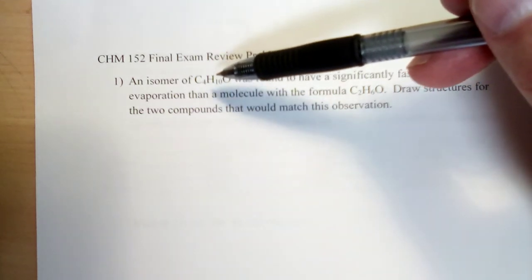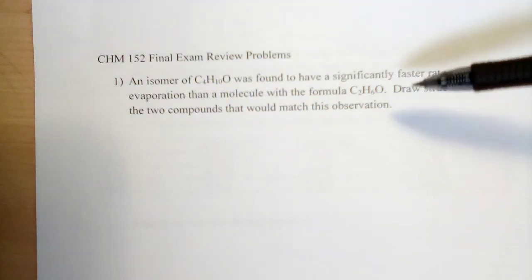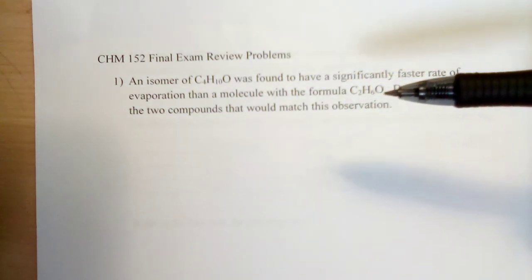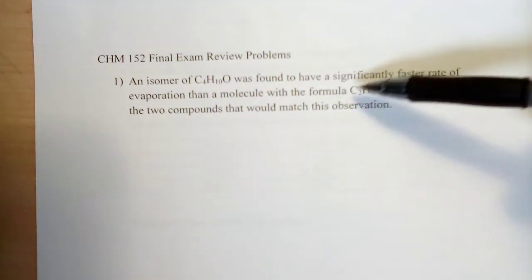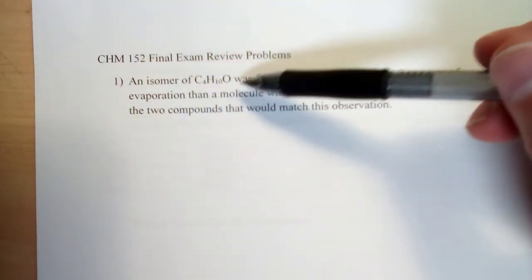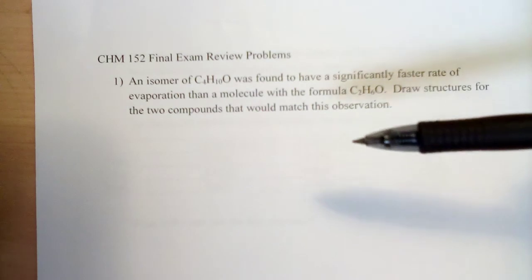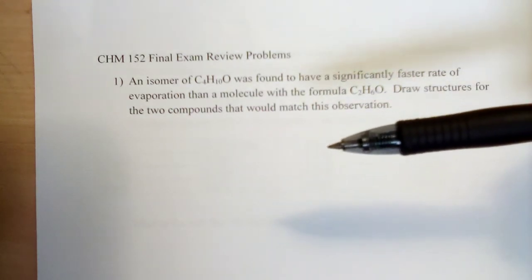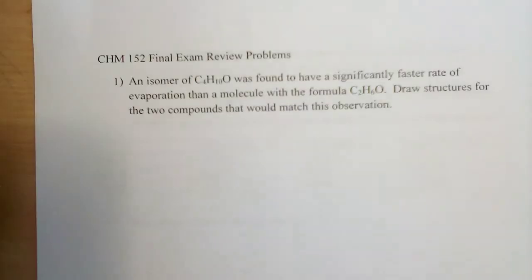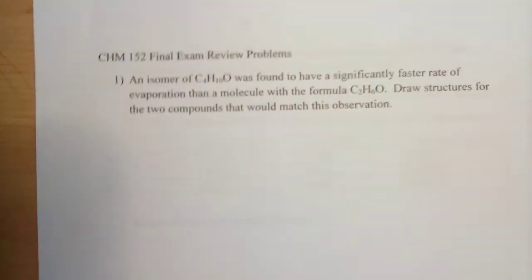For a larger molecule to have a faster evaporation rate, or we could think about that as a lower boiling point as well, it must have weaker intermolecular interactions. So we want to draw a structure here for C2H6O that's got strong intermolecular interactions. Based on this formula, I would say that means hydrogen bonding. And then we want to draw a structure for C4H10O that doesn't have those strong intermolecular interactions, which leads to it evaporating more quickly.